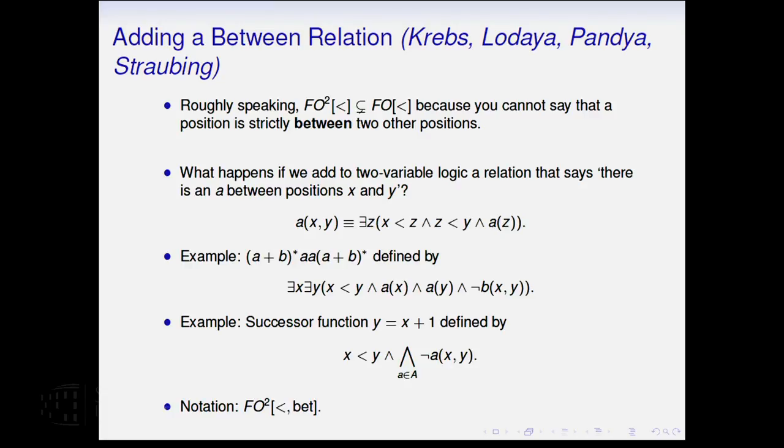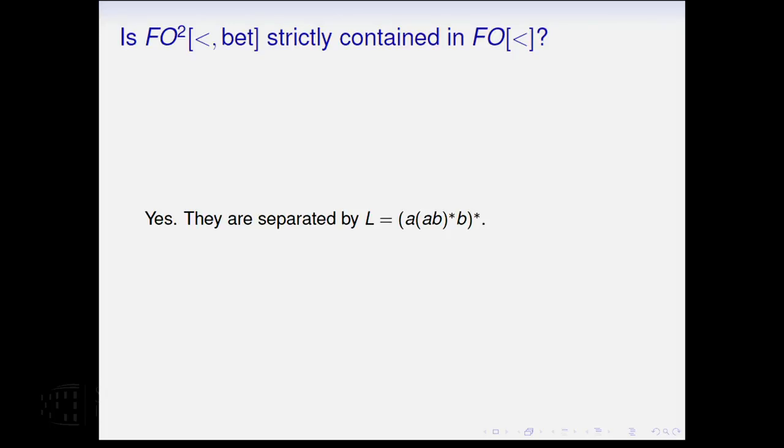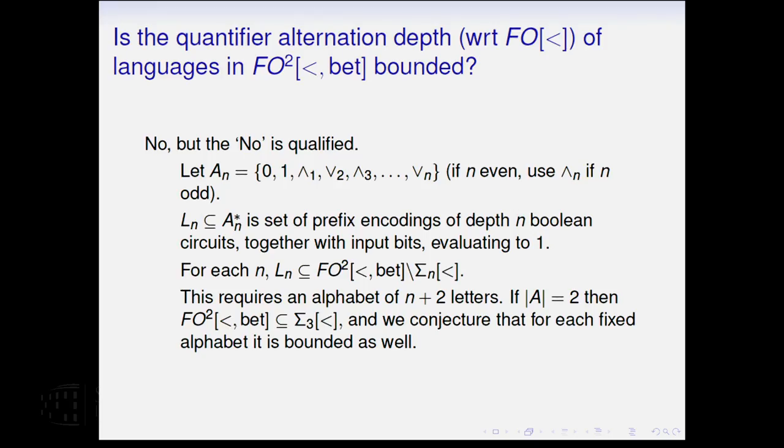And then you can define the successor relation if you do that. You can define the language we saw at the beginning of this talk. And we'll use this notation, first-order logic with two variables, but where you've added this between relation. And just to give a rundown of what's here. So the obvious question is do you recover all of first-order logic this way? The answer is no. Another way to say it more positively, this logic is still strictly contained in there. And this is an example that separates, and I'll see in a moment why that is. Is the quantifier alternation depth, the so-called dot depth of languages in this logic bounded? And the answer, again, is no, but it's sort of a qualified no because, once again, this depends on the size of the alphabet.